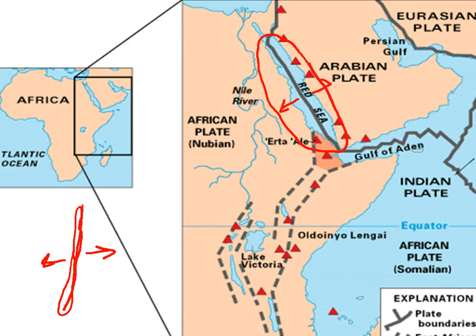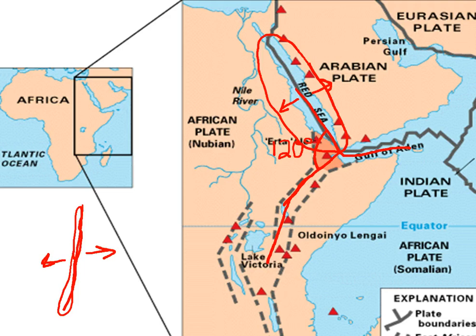Where this rifting happens, you have the Gulf of Aden and the Red Sea, which form approximately a 120-degree angle. Scientists have found that where this happens, typically two of the rifts take off and the other one fails. The one that's failing is this rift valley — you'll have some plate movement, but ultimately it's the Red Sea and the Gulf of Aden that will eventually move apart. Right now, the highlands of Somalia are holding back the Red Sea and Gulf of Aden waters, but weathering and erosion could remove those highlands and flood a lot of this area.